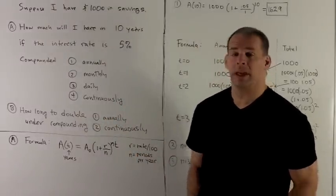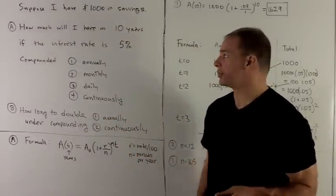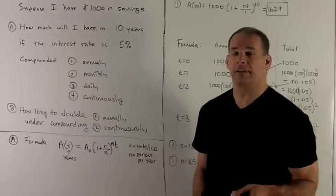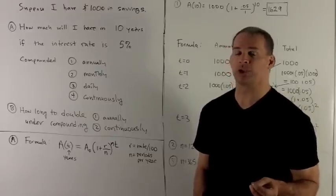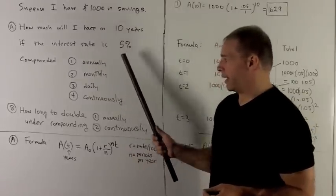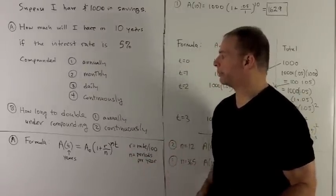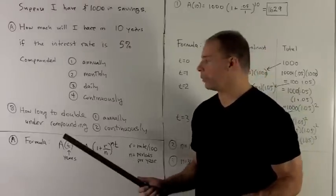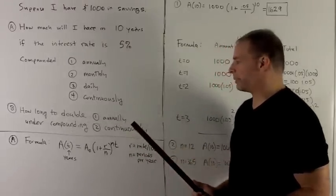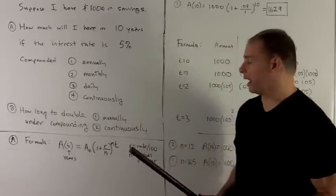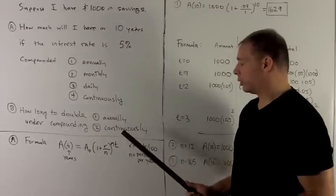The first part: how much money will I have in 10 years if the interest rate is 5%, the nominal interest rate, compounded annually, monthly, daily, or continuously? For part B, I want to know how long is it going to take my money to double if we compound annually or continuously.